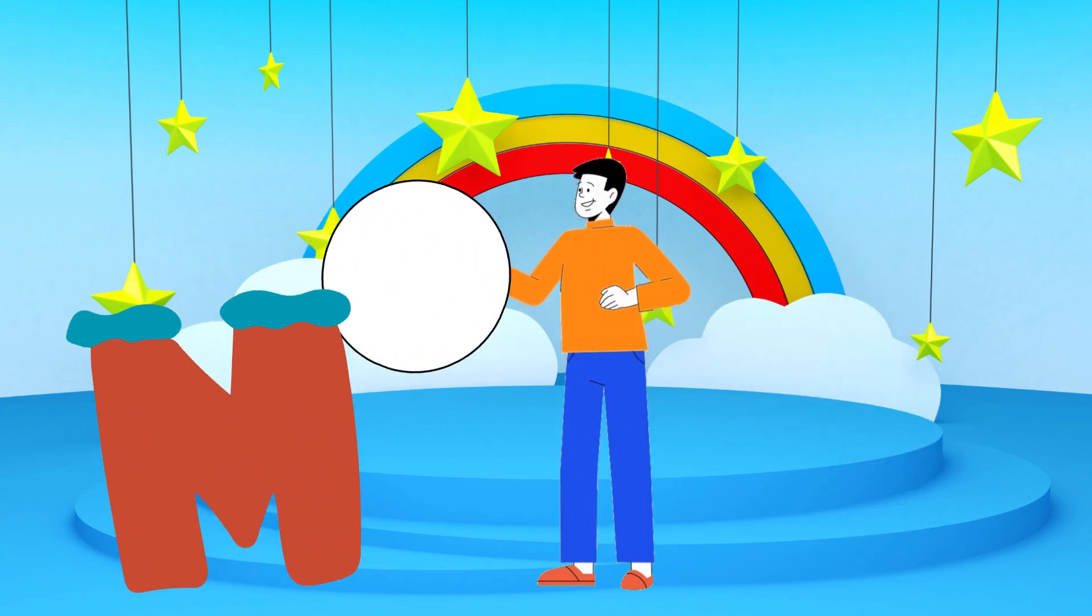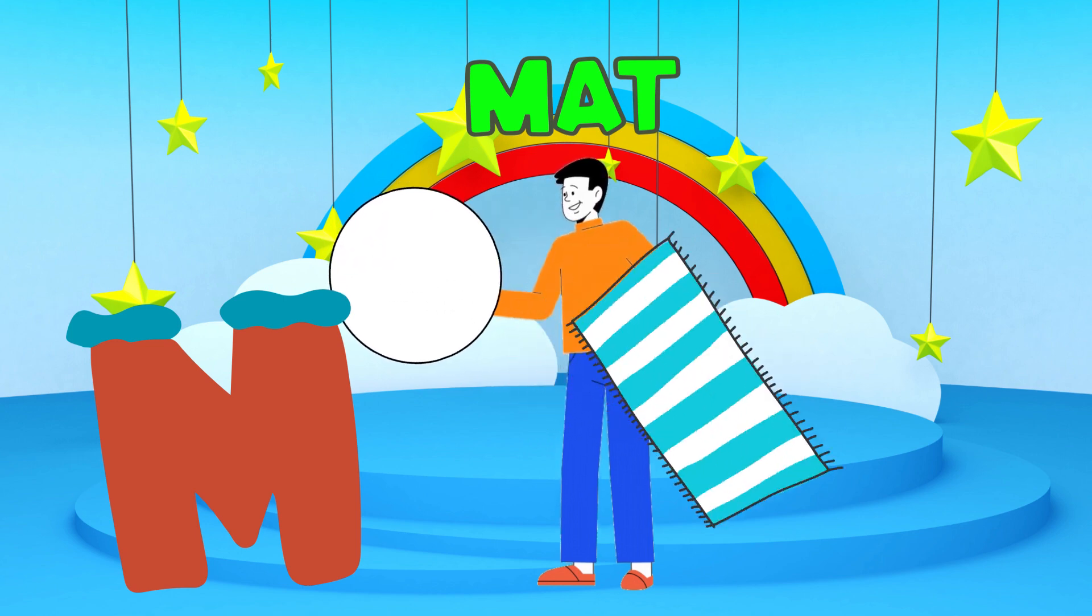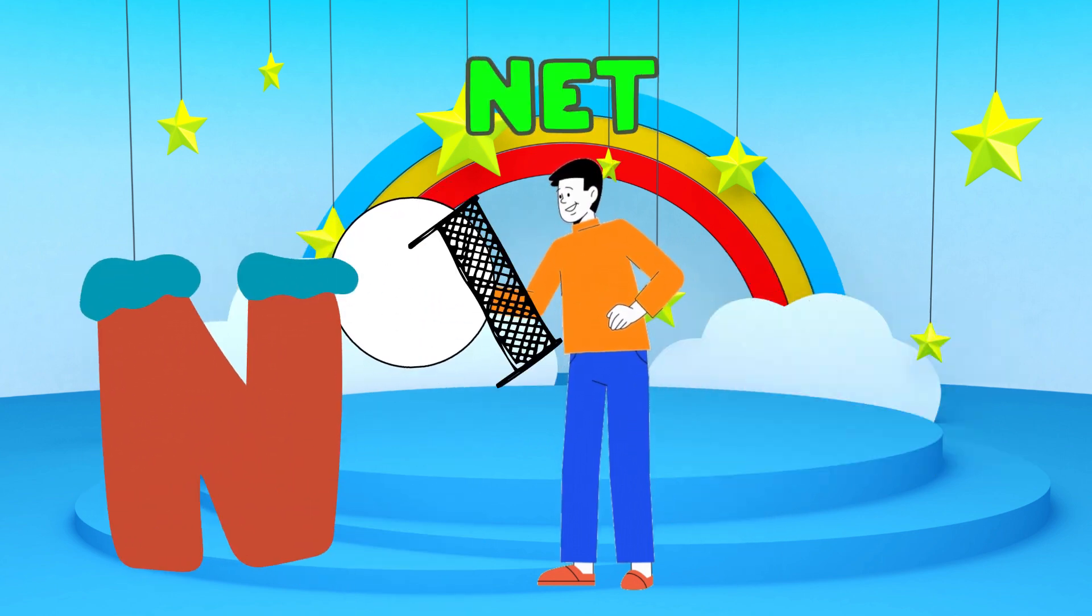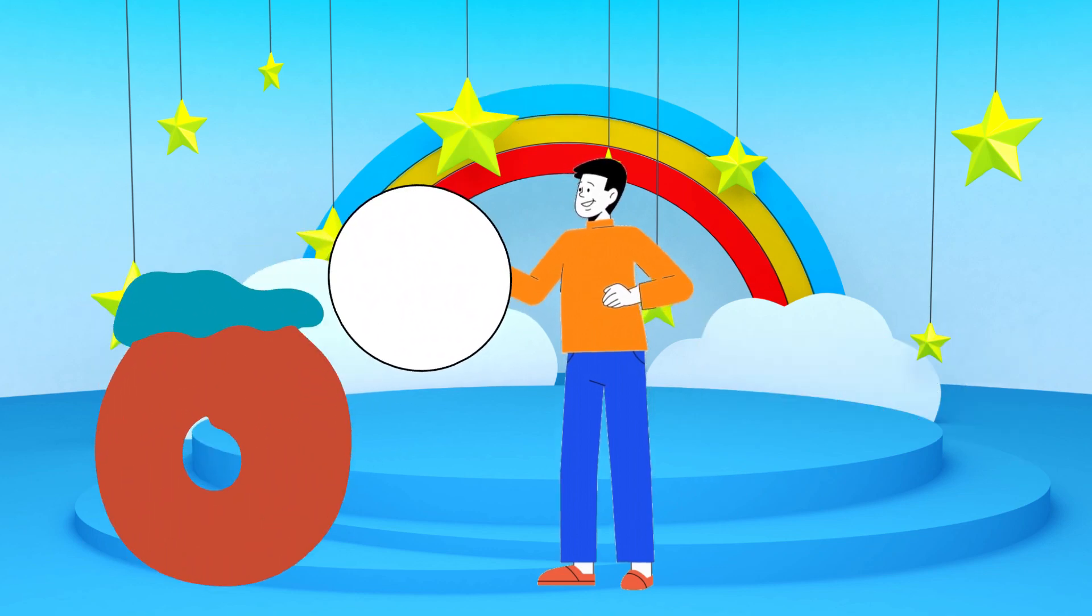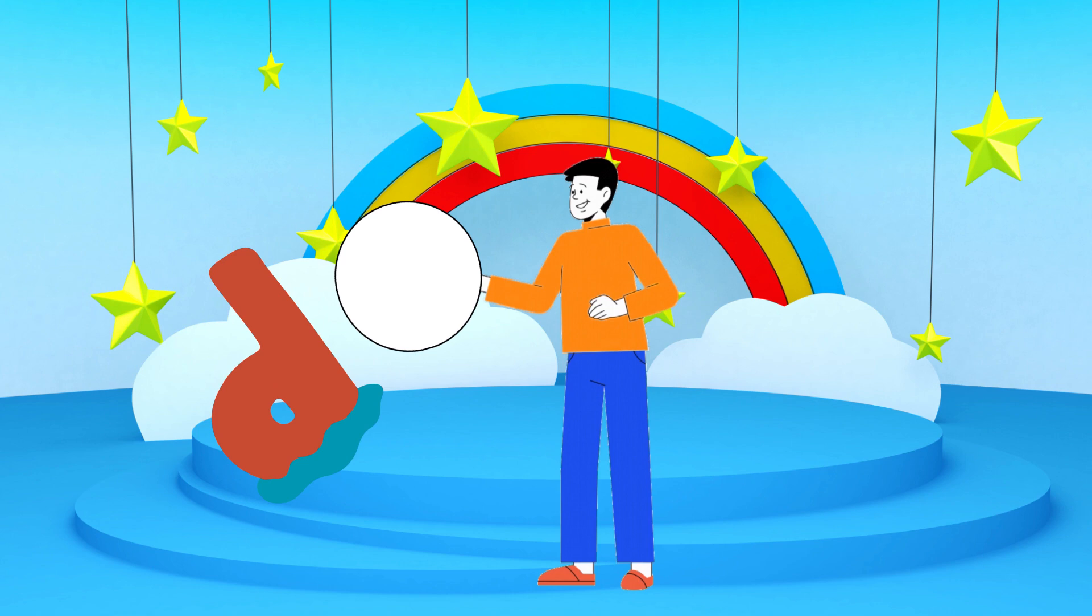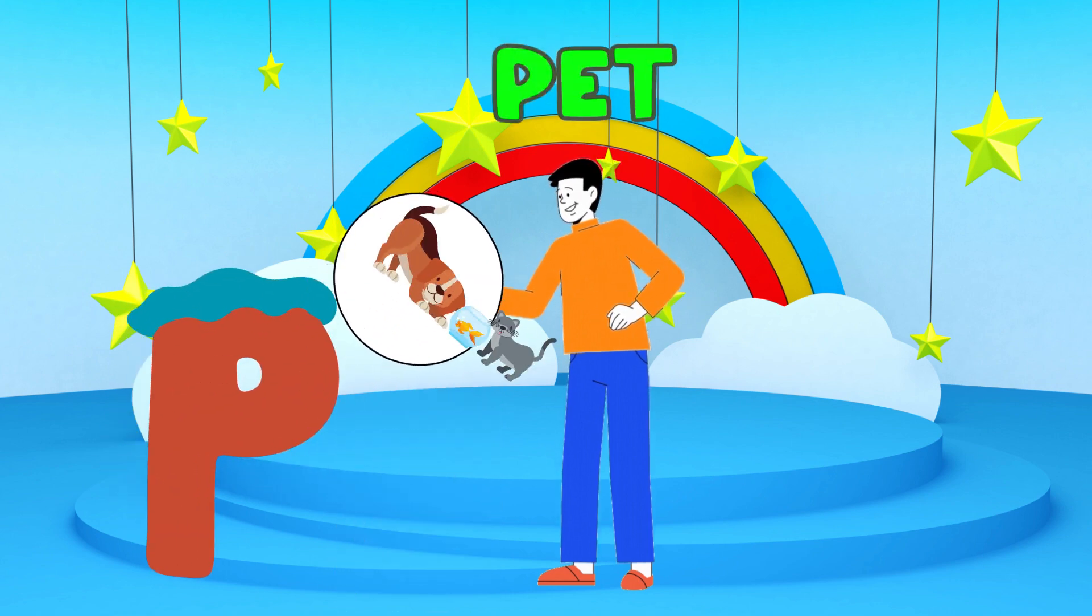M is for mat, m-m-mat. N is for net, n-n-net. O is for orange, o-o-orange. P is for pet, p-p-pet.